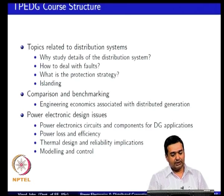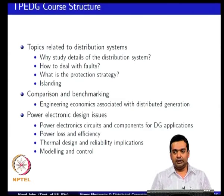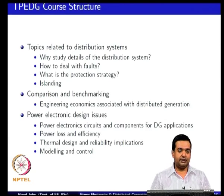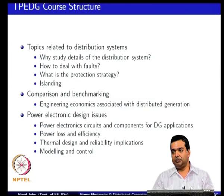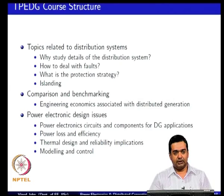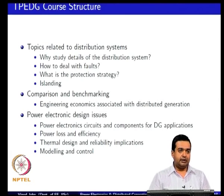The third part of the course is related to the power electronic design issues, where we look at the power electronic circuits for distributed generation applications. We will look at single phase, three phase, different topologies, the basics of the topologies and the components that go into a typical power electronic circuit. Those components are essentially inductors, capacitors, and switches — you would not intentionally put a resistor in a power electronic circuit because it is a dissipative source.